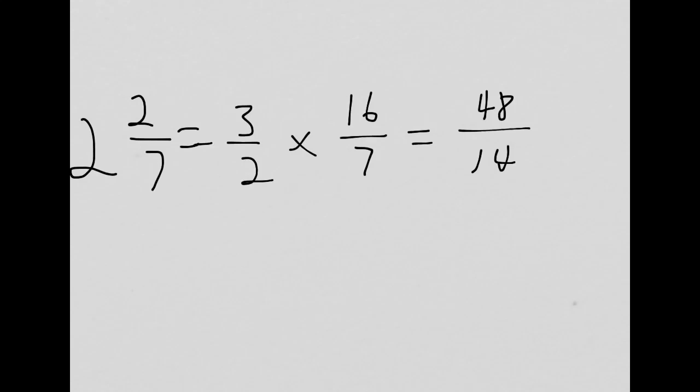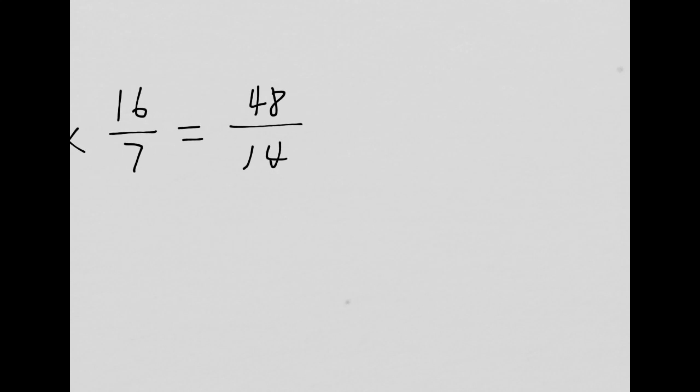14 isn't a factor of 48, but we can simplify that. They are, again, both even. Now, what do I do now? I have 24/7. I want to turn that back into a mixed number just to make this a little more understandable. I recognize that 7 goes into 24 three times. That would be 21, and I would have 3/7 left over.